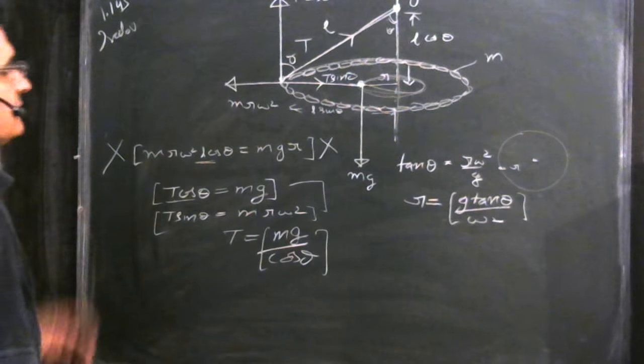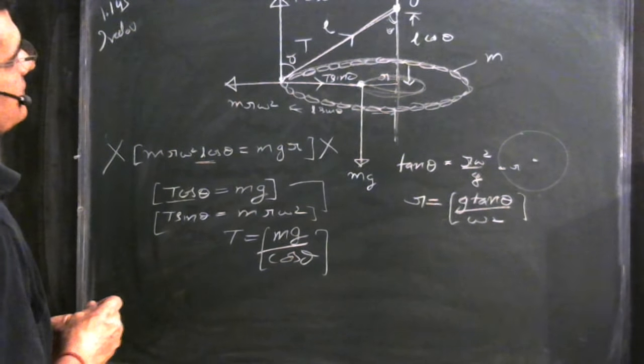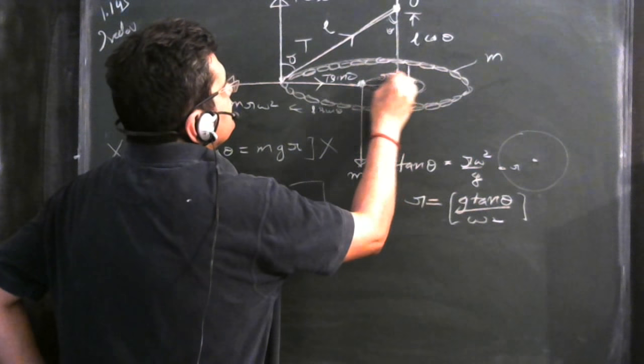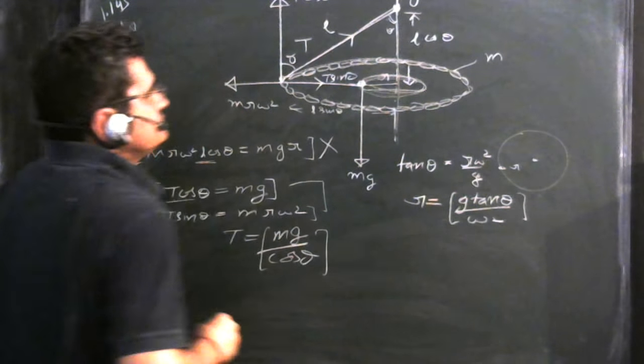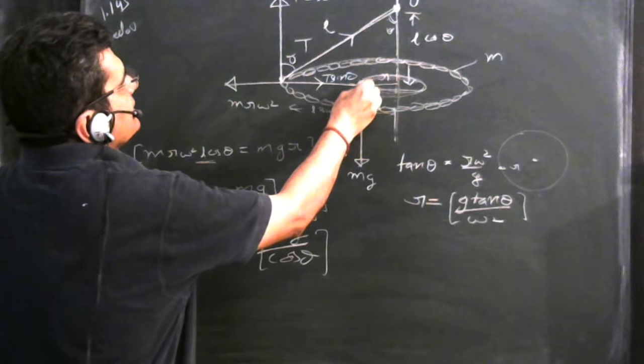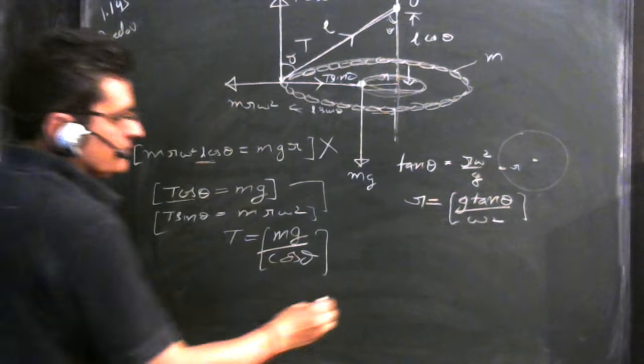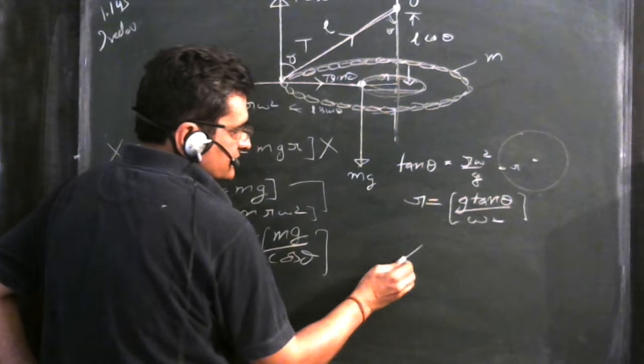So that's all for this problem. It's a very short problem. Only thing one has to keep in mind: imagine how the center would rotate. The center would rotate and it will always be towards the side where the string is, because the string is pulling the chain inside.